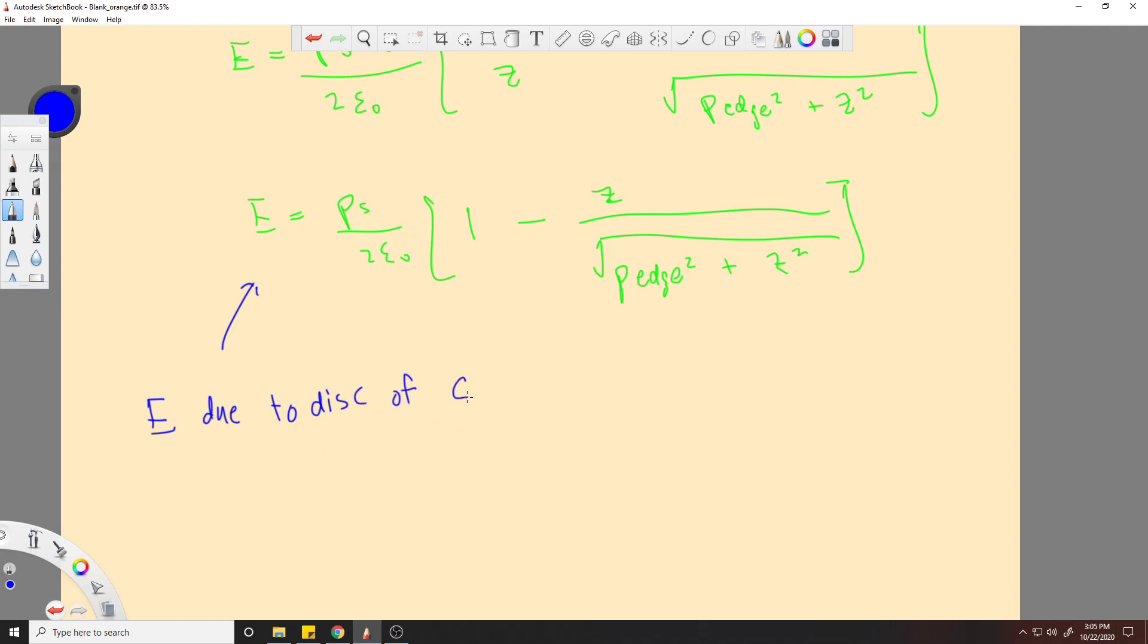So we'll take the disk of charge equation. And as long as you know how big your disk is, the edge of it and how far away your point of interest is to the disk, you can answer any problem, and you have to know rho s. So for us our rho s was, I forget, rho 0.2 and z was 0.5.